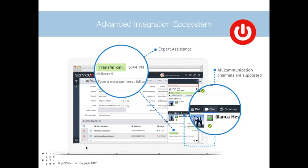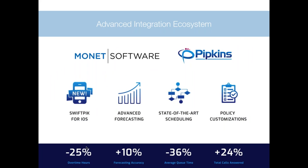The ServiceNow integration has all of the traditional benefits you see with an omnichannel platform — it addresses service inquiries faster, provides reduced agent load with automation, and also improves customer experience. We also did the Pipkins and Monet integration for more advanced forecasting and scheduling. On this slide you see some metrics of what contact centers were able to achieve when bringing workforce management integration into their contact center.